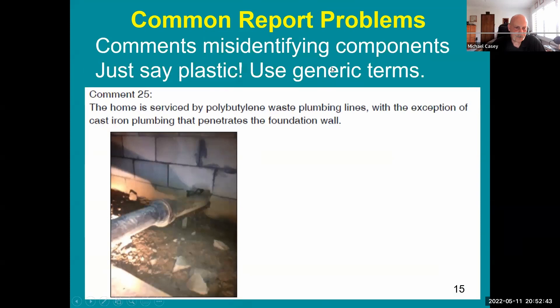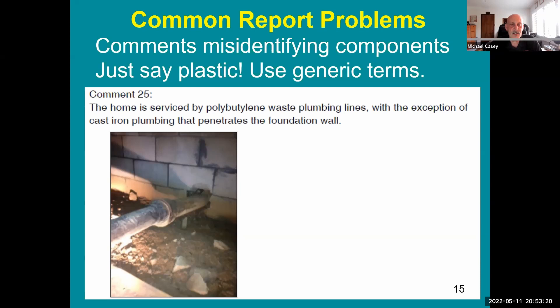Here's a report saying the home is serviced by 'polybutylene waste plumbing lines.' Polybutylene was used for water supply or distribution, not drain-waste-vent. The tip here: if you don't know how to identify a material, just call it plastic. That would have met the standard of practice. There is a piece of cast iron going out through the foundation wall, but if you don't know the proper name, use the most basic generic term.